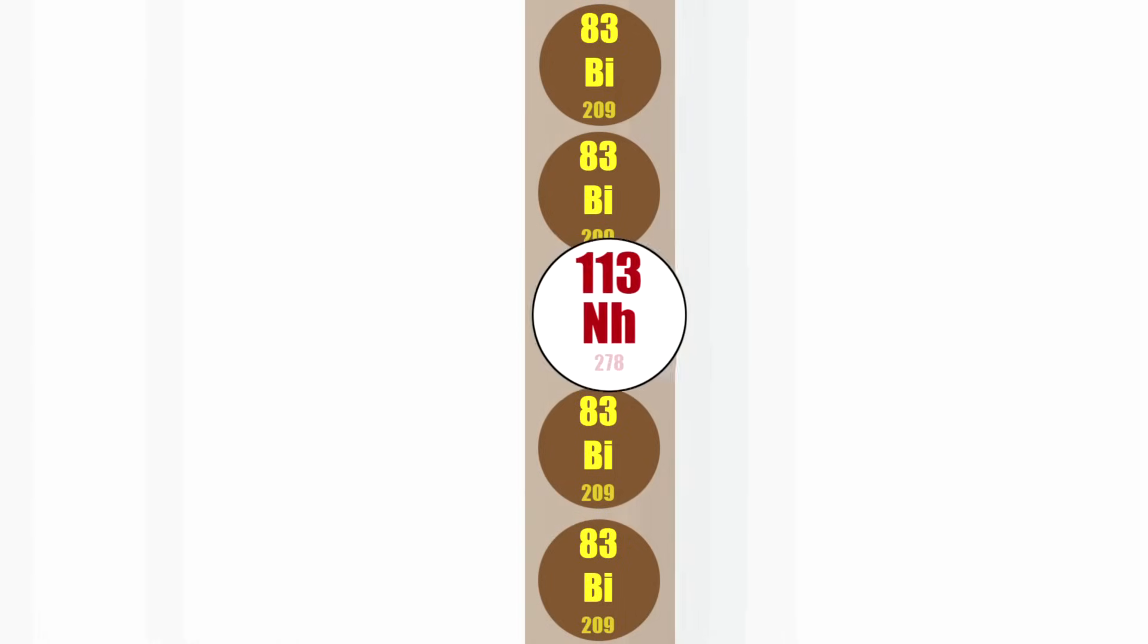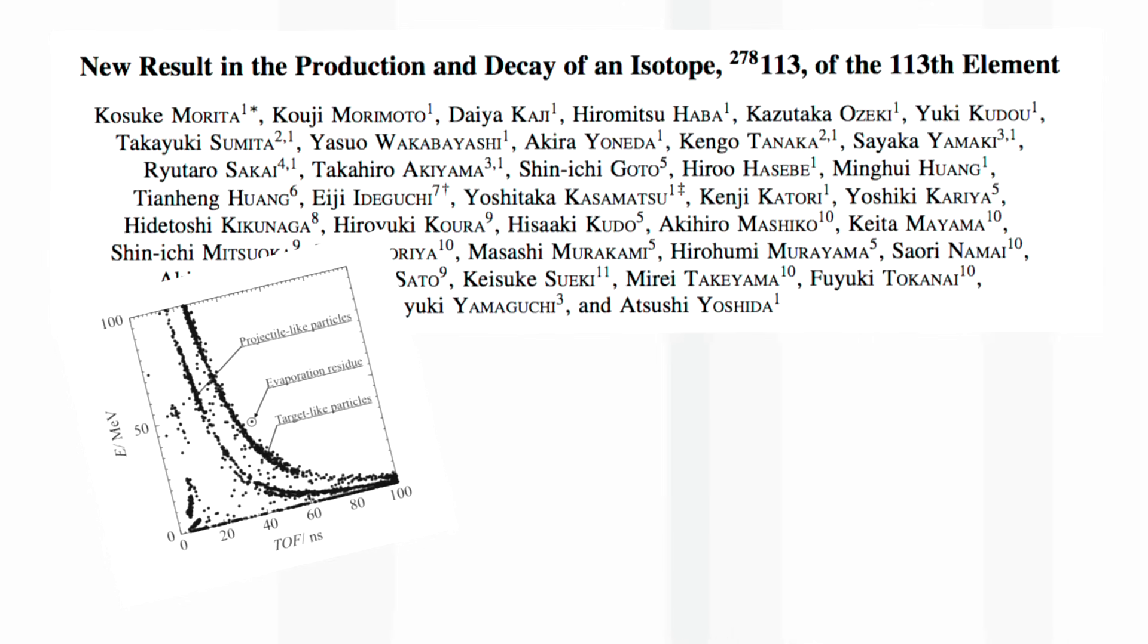You have to realize that you take billions and billions, perhaps trillions, of zinc atoms to get one atom of element 113. The Japanese lab observed three atoms over a period of nine years.